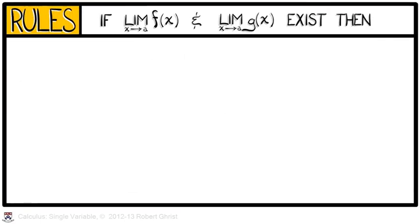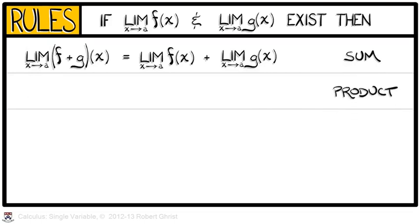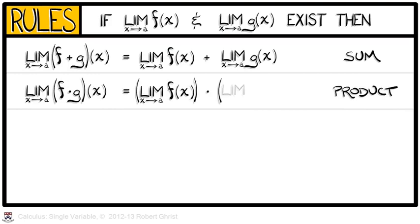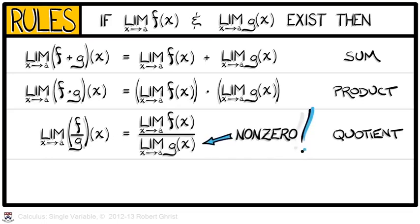There are certain rules associated with limits that you may know by hand, even if you don't remember them. If the limit of f of x as x approaches a and the limit of g of x as x approaches a both exist, then the following rules are in effect. There's a summation rule that the limit of the sum of f plus g is, in fact, the sum of the limits. There is, likewise, a product rule that the limit of f times g is, in fact, the product of the limits. There is, likewise, a quotient rule that the limit of f divided by g is the limit of f divided by the limit of g.